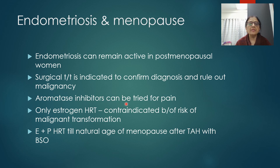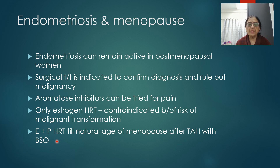Estrogen-only HRT is contraindicated postmenopausally in endometriosis due to risk of malignant transformation of endometriotic tissue. Estrogen combined with progestogens must be given as HRT at least until the natural age of menopause — for example, if a total hysterectomy with bilateral salpingo-oophorectomy is performed at age 40, and natural menopause would be around age 45–48, HRT should be given until that age.